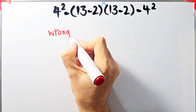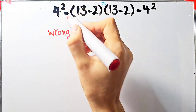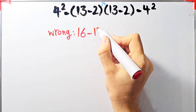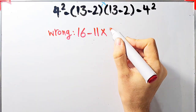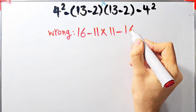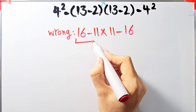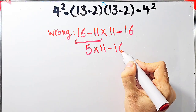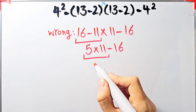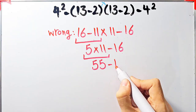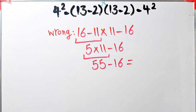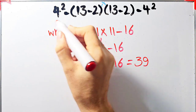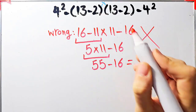For example, working left to right: 4 to the power of 2 equals 16; 16 minus (13 minus 2) equals 16 minus 11 equals 5; then times 11; minus 4 to the power of 2 which equals 16. So 5 times 11 equals 55, and 55 minus 16 equals 39. They say the final answer equals 39, but this answer is definitely wrong.